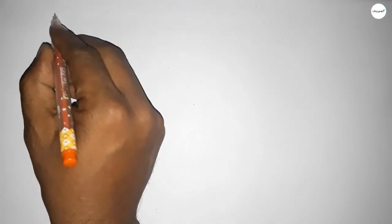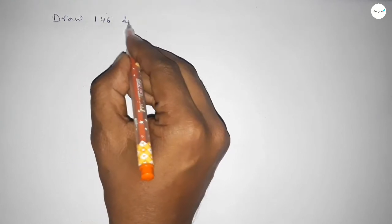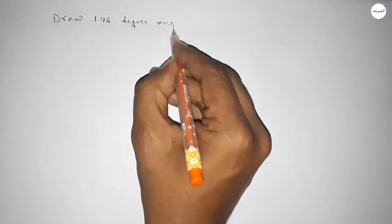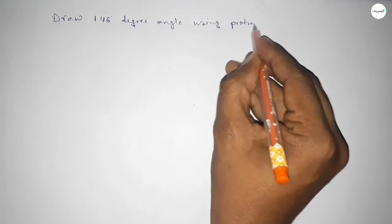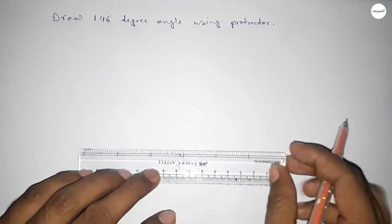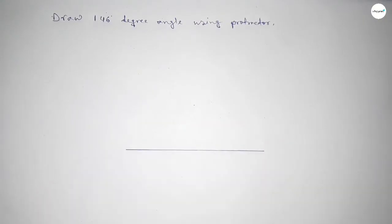Hi everyone, welcome to A-Size Chair Classes. Today in this video we have to draw a 146 degree angle by using a protractor. So let's start the video. First of all, we have to draw here a straight line of any length.